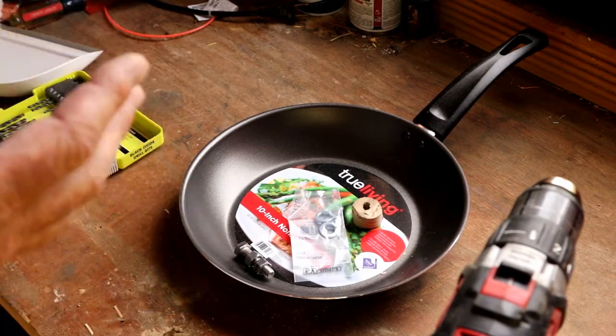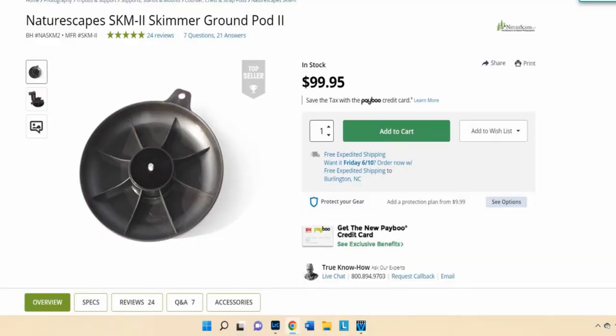This is a real simple thing that you can make. Now to give you an idea, they cost about a hundred dollars online. So this one here we made for less than $20. I think the fry pan cost $12 and the bolts cost less than $4.